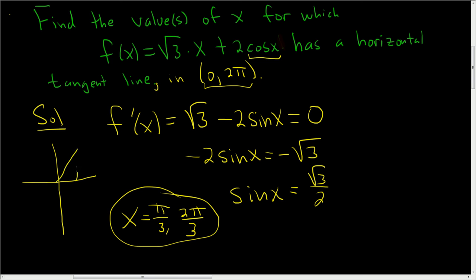π over 3 is here. And then you need to ask yourself, is there another value of sine, another angle for which the sine of that angle is square root of 3 over 2? Well, yeah, over here. How do you know it's over here? Well, the sine function is the y-coordinate on the unit circle, so the y-coordinate is positive here. So that other angle is right here, 2π over 3. I hope this helps someone out there.